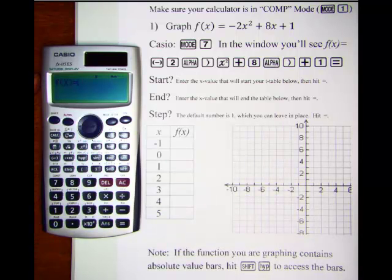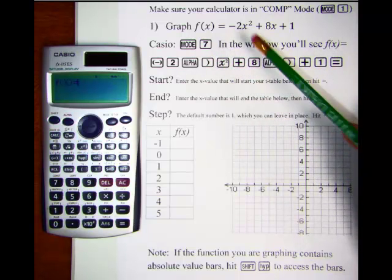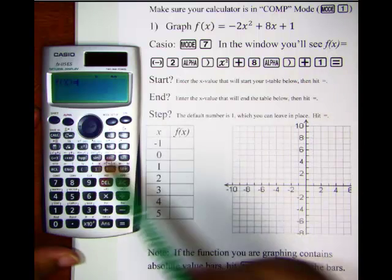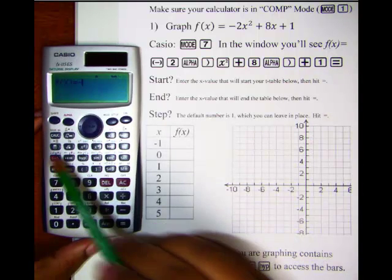What you'll see in the window is f of x equals, so we are ready to enter in our function. We're going to enter negative 2.